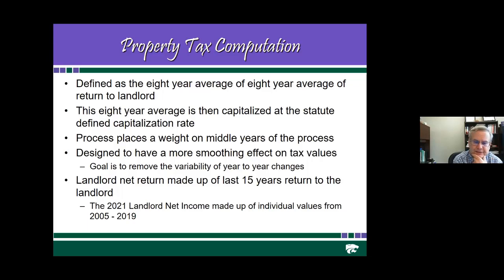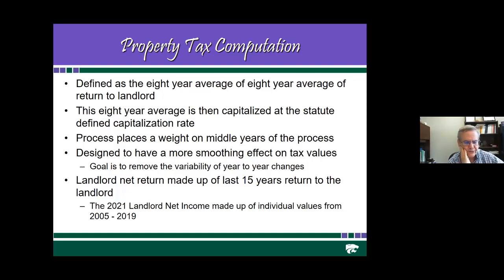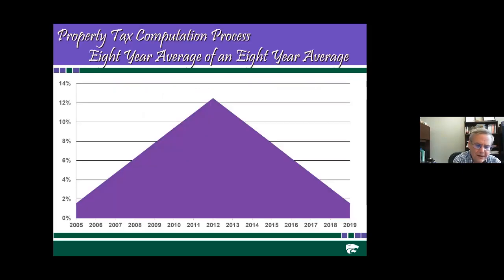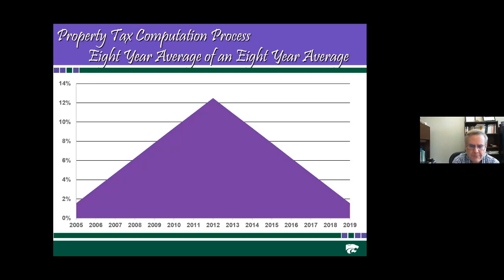This eight-year average is then capitalized at the statute-defined capitalization rate of 11–12%. The process places more weight on the middle years. For example, the 2021 landlord net income is made up of individual values from 2005 to 2019. The 2005 and 2019 values each have about a 1.6% weight, and this increases by roughly one-eighth each year, such that 2012 — the middle year — has a 12.5% weight. These probabilities sum to one, but it is weighted.